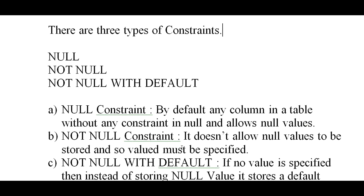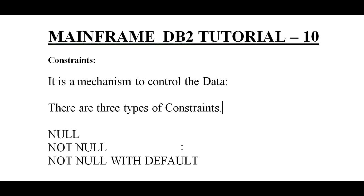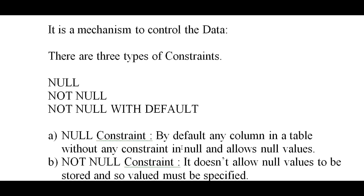Not null with default: if no value is specified, then instead of storing a null value, it stores a default value based on the data type. So these are the three types of constraints.